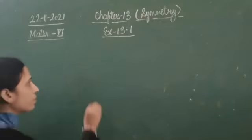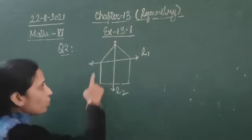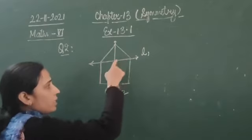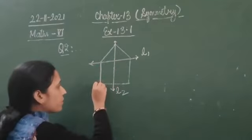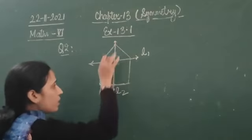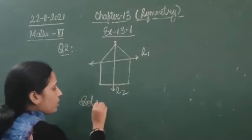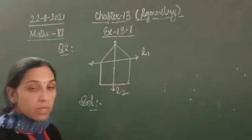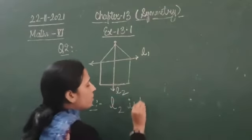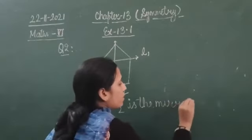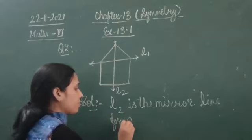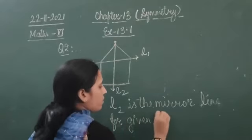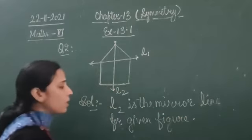The question asks which line is dividing this whole figure into two identical parts. If you look at line L1, it is not dividing the figure into two equal halves — above one is a triangle and below one is a square. So L2 is the mirror line for the given figure.